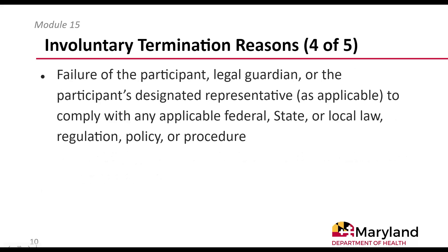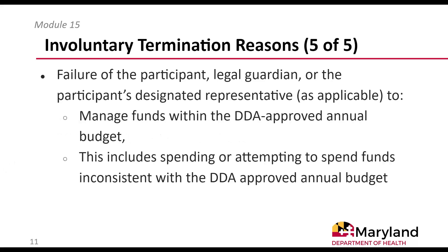Reasons for termination also include failure of the participant, legal guardian, or the participant's designated representative to comply with any applicable federal, state, or local law, regulation, policy, or procedure. Additionally, failure to manage funds within the DDA-approved annual budget, including spending or attempting to spend funds inconsistent with the DDA-approved annual budget, is a reason for termination. Determined fraud, waste, or abuse could result in immediate termination from the self-directed services model.